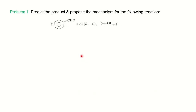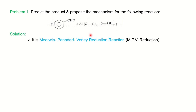The first problem asks you to predict the product and mechanism for the given reaction. An aromatic aldehyde is given along with Aluminium Isopropoxide and Isopropyl Alcohol. Whenever you have an alcohol and an aldehyde or ketone group in the presence of Aluminium Isopropoxide, you can consider it the Meerwein-Pondorf-Verley Reduction Reaction, also called the MPV Reduction Reaction in short.